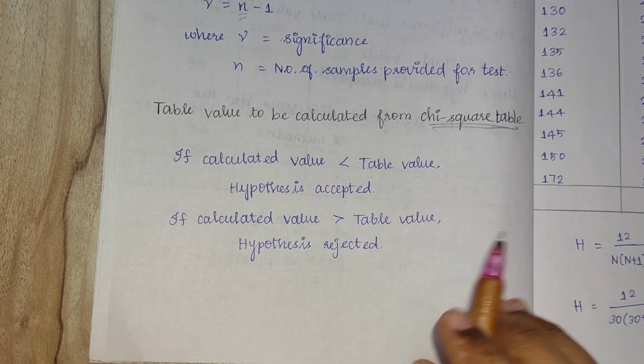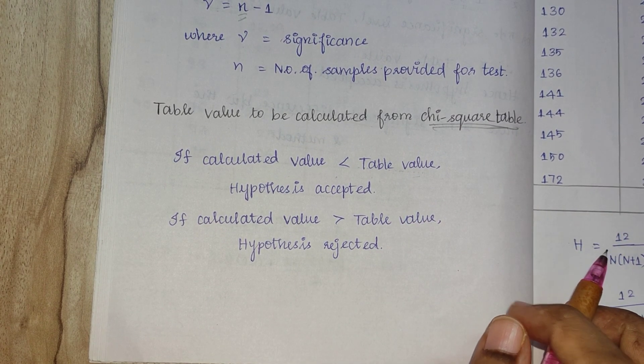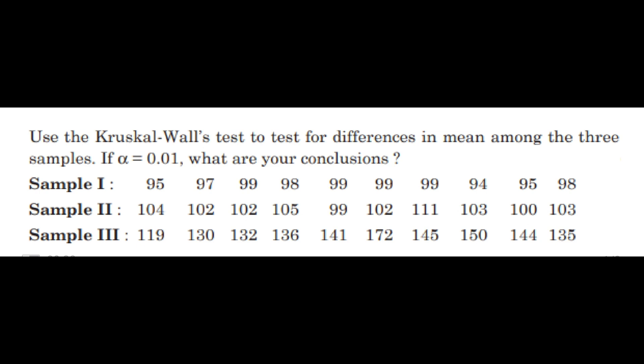Now let us look at a problem. Use the Kruskal-Wallis H test for the difference in mean among three samples, if alpha is equal to 0.01. That is, the significance level is 1%, because 1 divided by 100 equals 0.01. What are your conclusions?